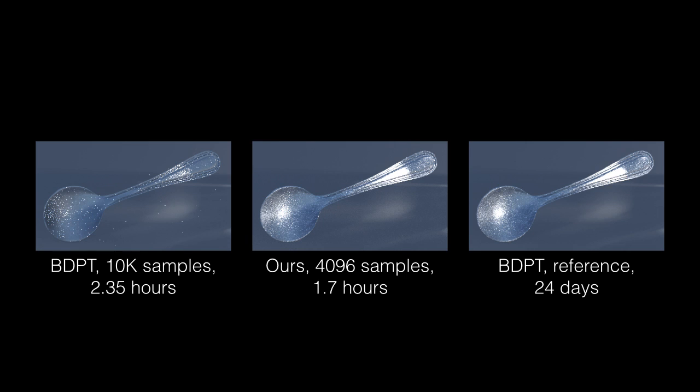In under two hours, our approach captures the complex secondary high-frequency reflections of the caustic lighting along the length and bowl of the spoon. These visual cues are completely missing from the equal-time bidirectional path tracing rendering, and a ground-truth 24-day bidirectional path tracing rendering is necessary to obtain the same visually converged results as our approach.